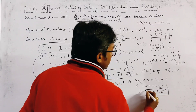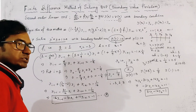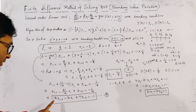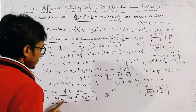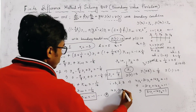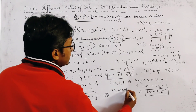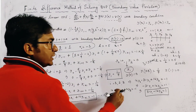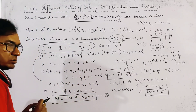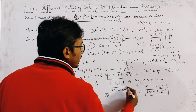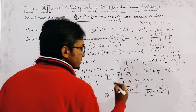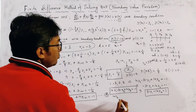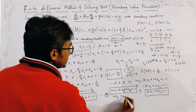Putting i = 2 gives the second equation: 16y₁ − 31y₂ + 16y₃ = −1, where y₁, y₂, y₃ are all unknown.